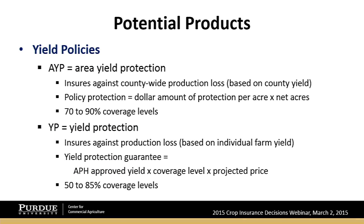For yield protection products, you have area yield protection and yield protection. Yield protection is a farm-by-farm calculation: take your APH-approved yield, multiply by your coverage level, multiply by projected price, and that gives your yield protection guarantee. Coverage choices range from 50% to 85%, but for a good-yielding county like White County, you're really looking at 75%, 80%, or 85% — most likely focusing on 80% and 85%.